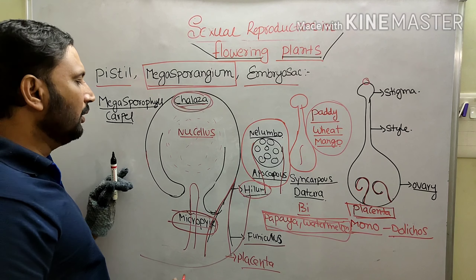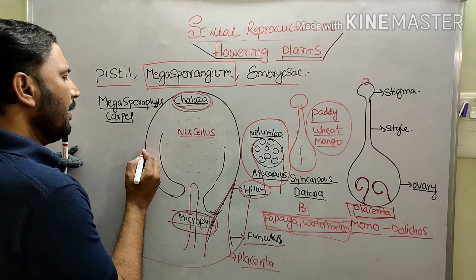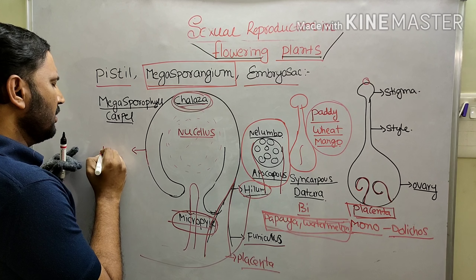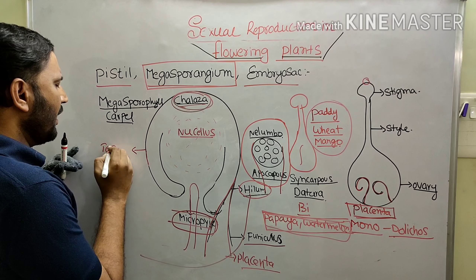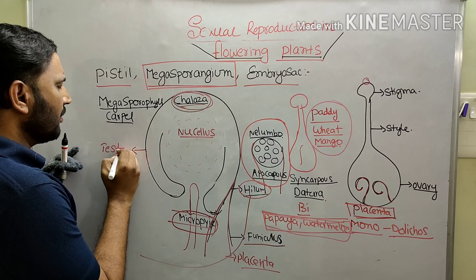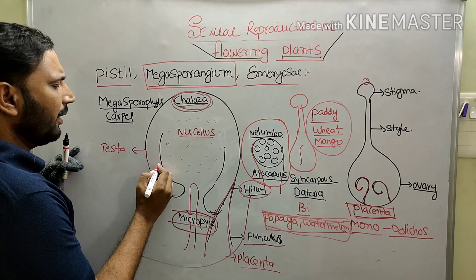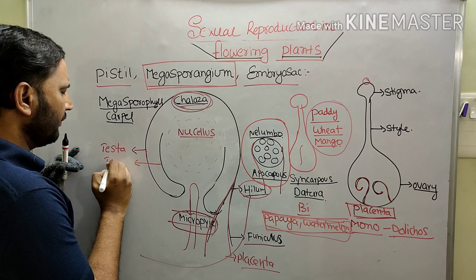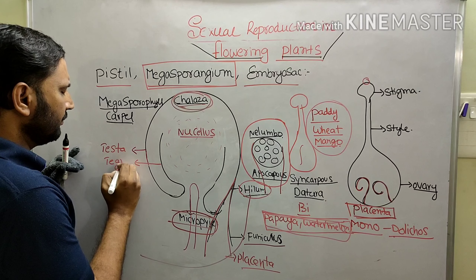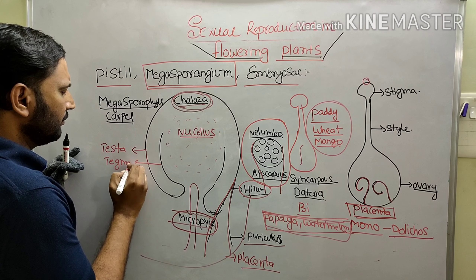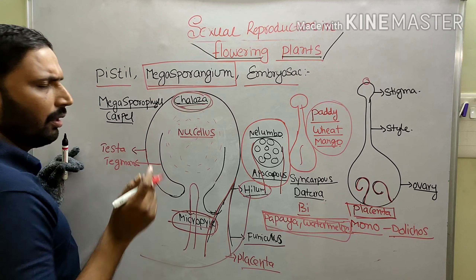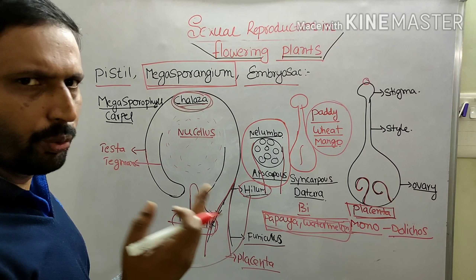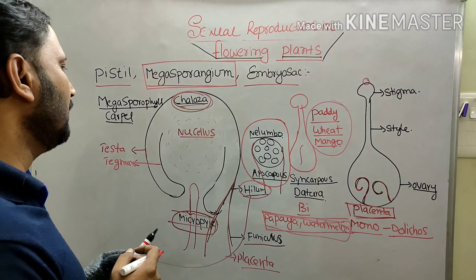Two layers are present: the outer layer is called Testa and the inner layer is called Tegmen. After fertilization, the ovule develops into a seed.